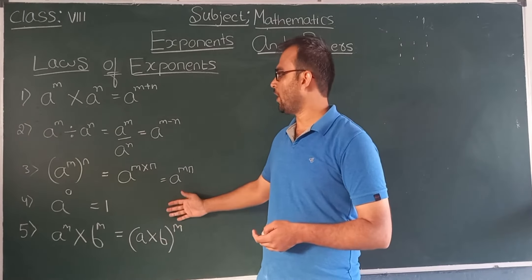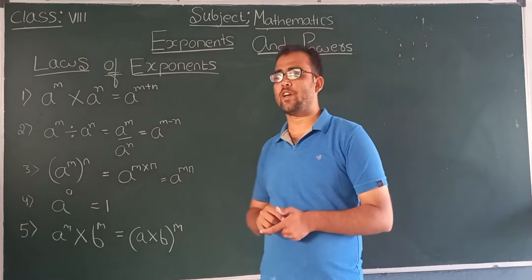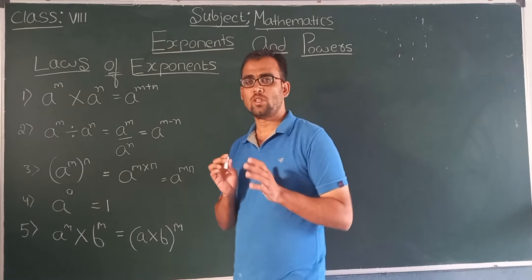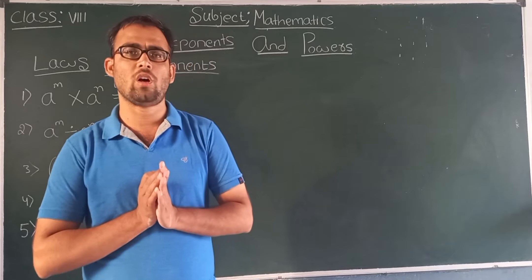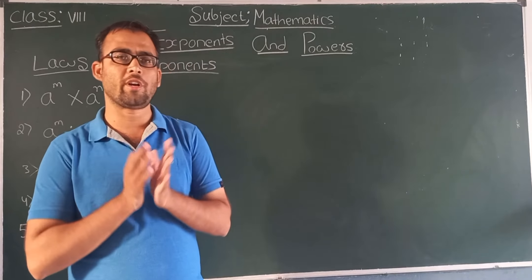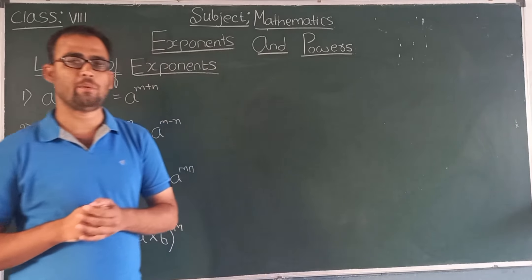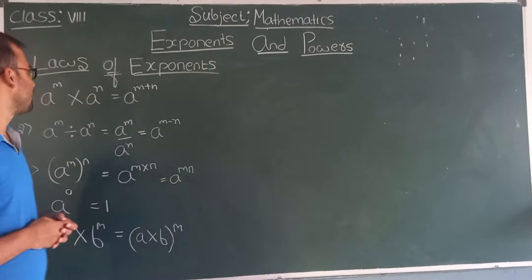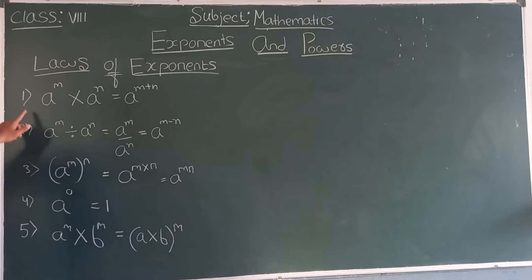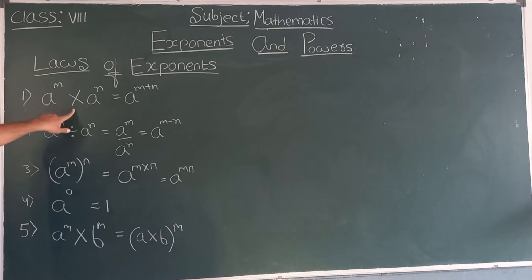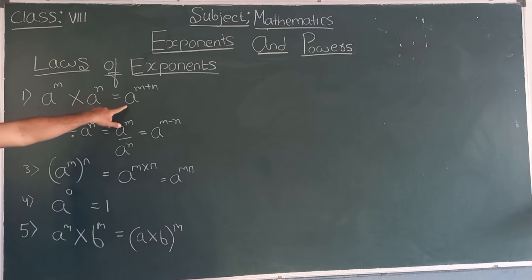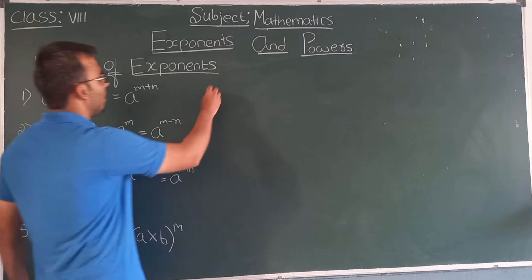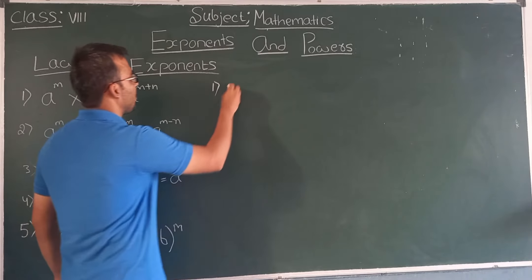So these are the five laws of exponents. These are the most important laws and the most important things that we need to remember. Now let us start with the first one: a to the power m, multiplied by a to the power n, equals a to the power m plus n.